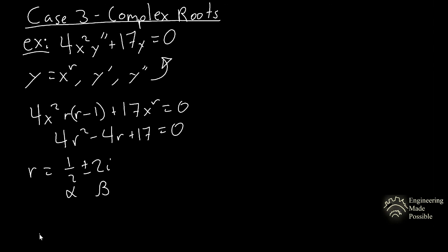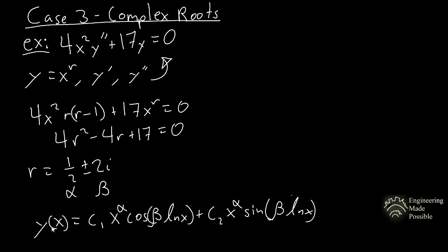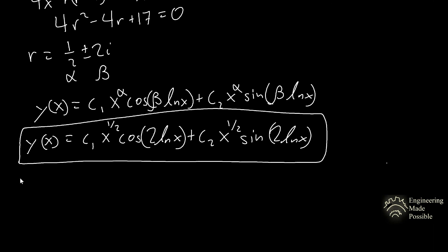For complex roots, the general solution has the form: c₁ times x to the alpha times cosine(beta · ln x), plus c₂ times x to the alpha times sine(beta · ln x). With alpha equals one-half and beta equals 2, the general solution is y equals c₁ times x to the one-half times cosine(2 ln x) plus c₂ times x to the one-half times sine(2 ln x). This covers all three cases: distinct roots, repeated roots, and complex roots.